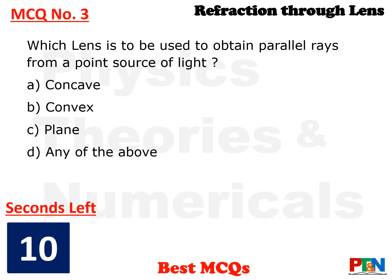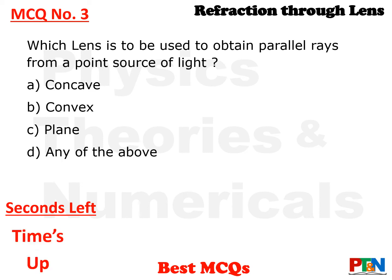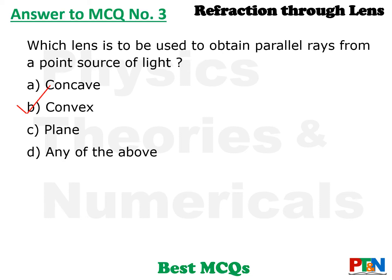Next MCQ. Which lens is to be used to obtain parallel rays from a point source of light? Options: concave, convex, plane, or any of the above. 10 seconds time. Time is up. The answer is convex lens. A convex lens basically converts a point source of light into parallel rays.